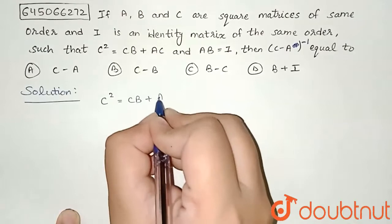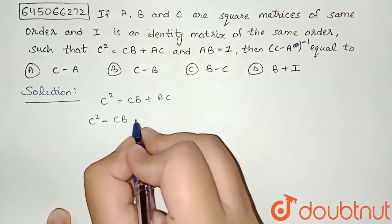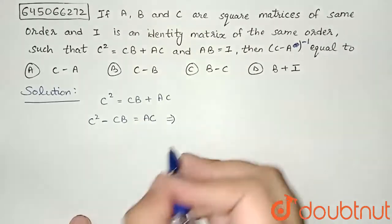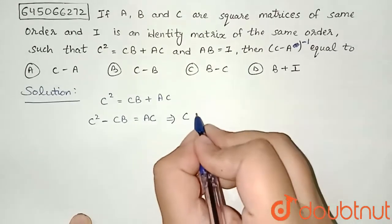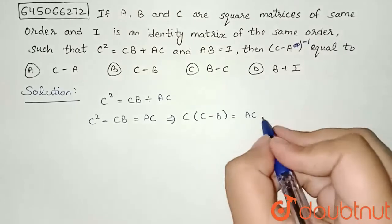I am taking CB to this side, so C² - CB = AC. This will imply, I will take C common here, so C(C - B) = AC.